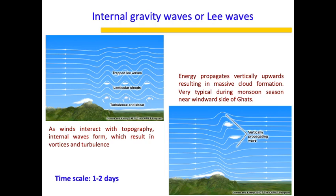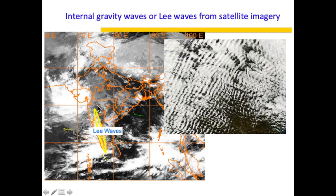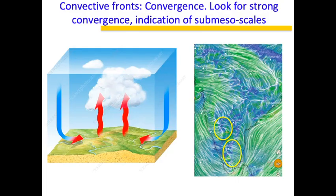One very interesting submesoscale feature is an internal gravity wave — these are lee waves which get trapped near ghat sections and lead to very intense rain events. You should look out for these lee waves, which usually form if there is an offshore trough due to formation of a Bay of Bengal system. We can say with 70 to 80% probability that if these kinds of systems are forming, there is a high chance of a very intense rainfall event. Similarly, when there is a convective front, look for strong convergence of warm and cold air — these intense convergence zones are where you can expect heavy thunderstorms.